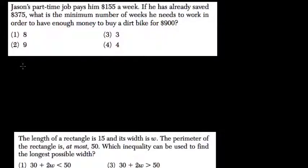Jason's part-time job pays him $155 per week. So we have $155 for every week he works. He already has $375. What is the minimum number of weeks he needs to work to have enough money to buy a dirt bike for $900?